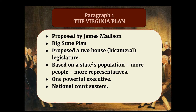Our first paragraph in this essay is going to be about the Virginia Plan, and these are the facts that must be in that paragraph. First of all, you need to say that the Virginia Plan was proposed by James Madison, and it was also known as the Big State Plan. You need to know that it proposed a two-house legislature, and the word we use for two houses is bicameral.